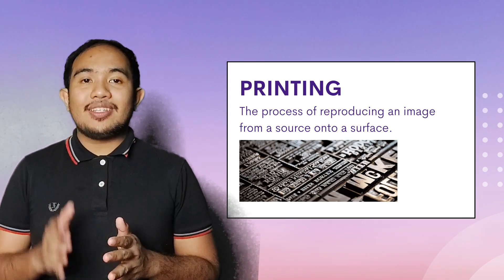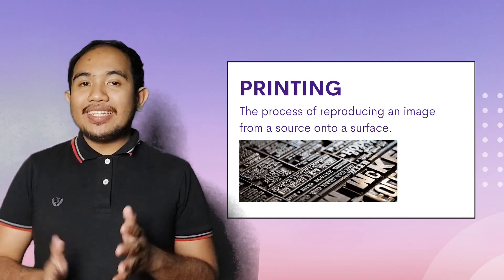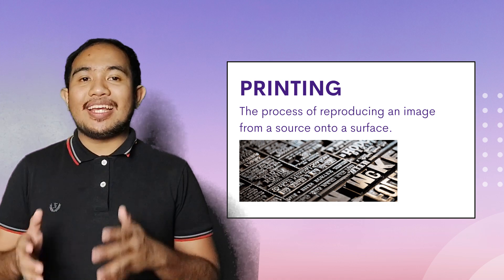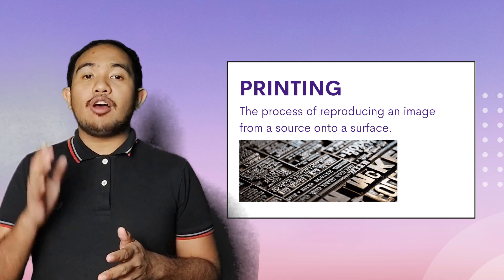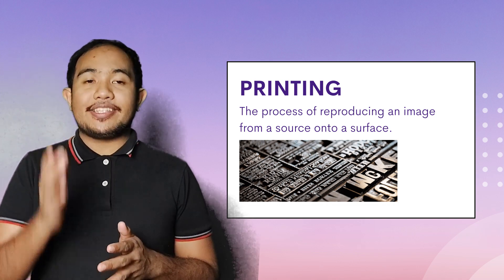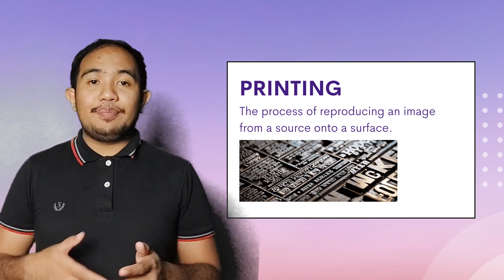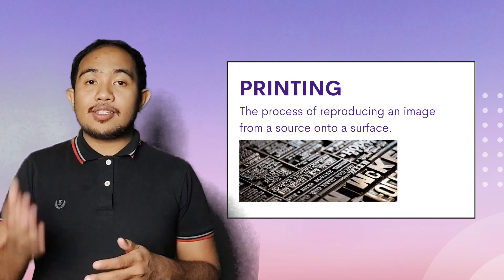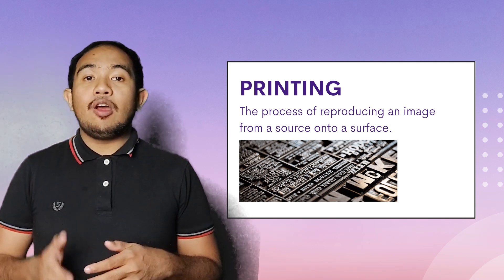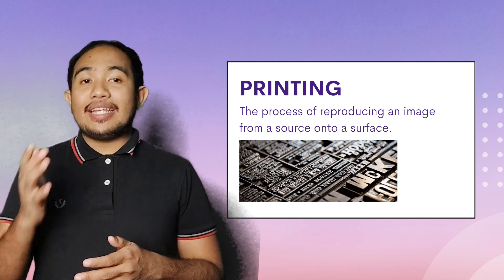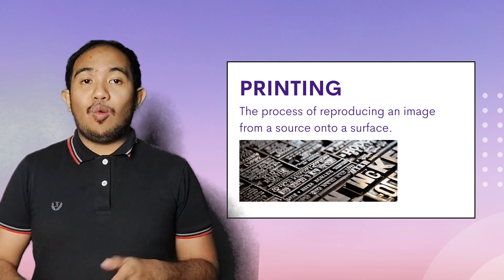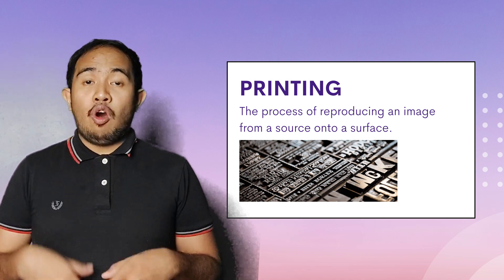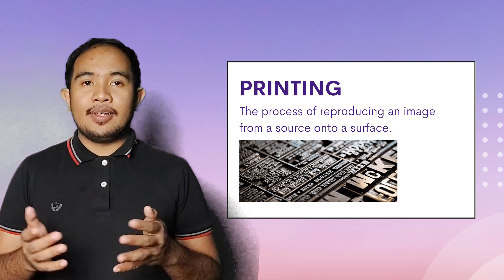Let us first define printing. Printing is the process of reproducing an image from a source onto a surface. The surface can be paper, wood, stone, or other material where you can put an image, while an image can be a text, photo, or other visual elements.